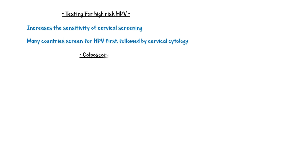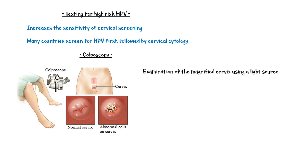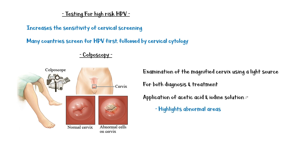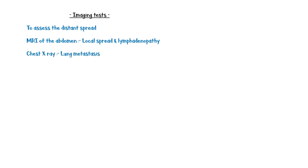Colposcopy is the examination of the magnified cervix using a light source, and it is used for both diagnosis and treatment. Application of acetic acid and iodine solutions highlights abnormal areas, as you can see in this picture, because acetic acid gives a white color to areas where there is a high rate of cell proliferation. Imaging tests can be used to assess distant spread: MRI of the abdomen can look for local spread and lymphadenopathy, and chest X-rays are taken to assess lung metastasis.